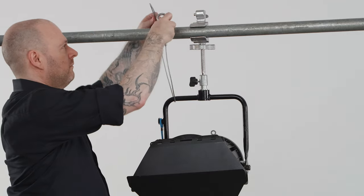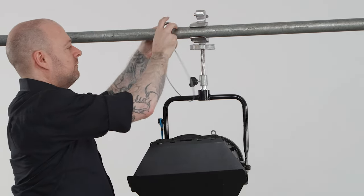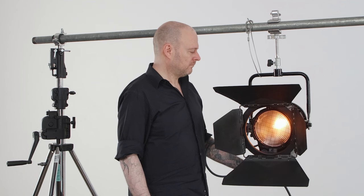Place the safety cable through the yoke and around the pipe, because gravity happens. Now it's time to strike this bad boy.